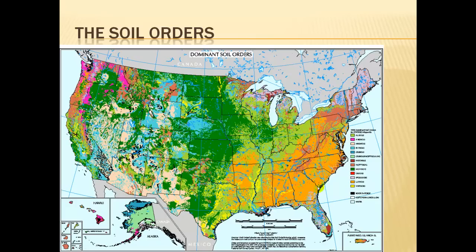By looking at these soil orders we can see some patterns developing. There's a dark green extending through the country from Texas all the way up into North Dakota and Montana — if you know your geography, that's where our grasslands and prairies were, our western plains. Over in the orange area we can think of the southeast United States, where you find some of the older soils. There's a pink salmon color associated with the desert. And this pinkish up in the Northwest is associated with volcanic deposits. All these different soils are related to the types of materials they formed in and different climate types.